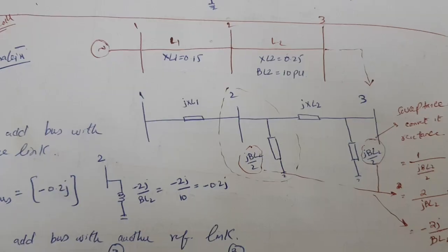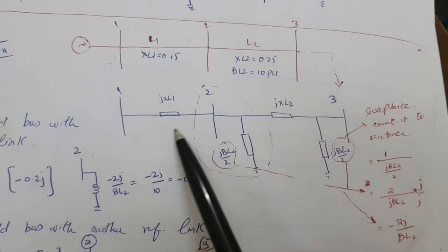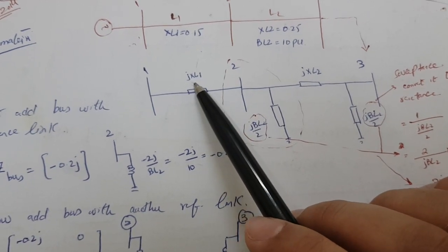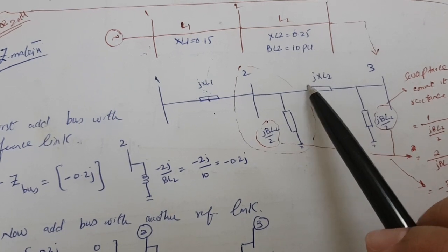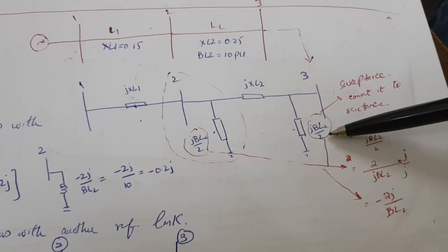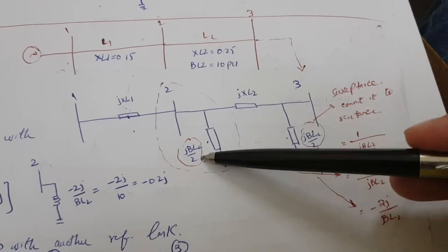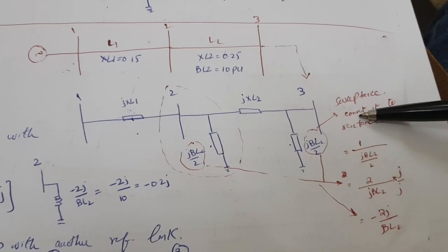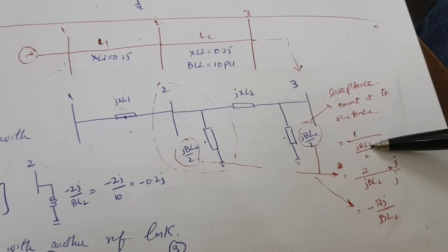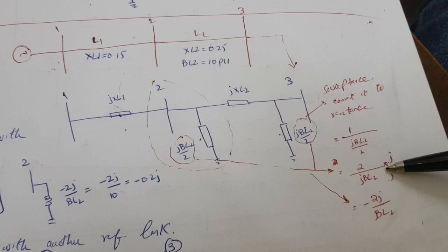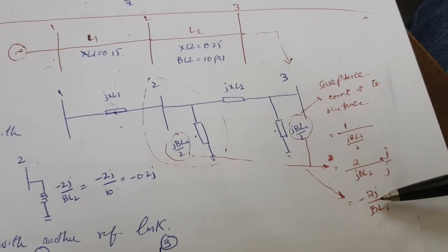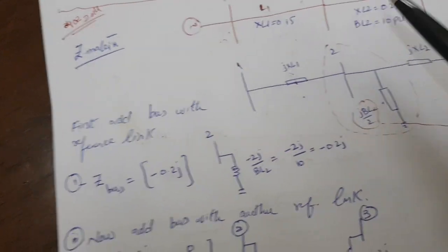I have made the equivalent circuit of the given network. You can see I have put the reactance with line 1 and the line 2 reactance plus susceptance. The susceptance is always j·B_L/2 on both sides. We have to convert it to reactance first: reactance equals one over j·B_L2/2, which gives minus 2j / B_L2. So this susceptance on both sides equals minus 2j / B_L2.